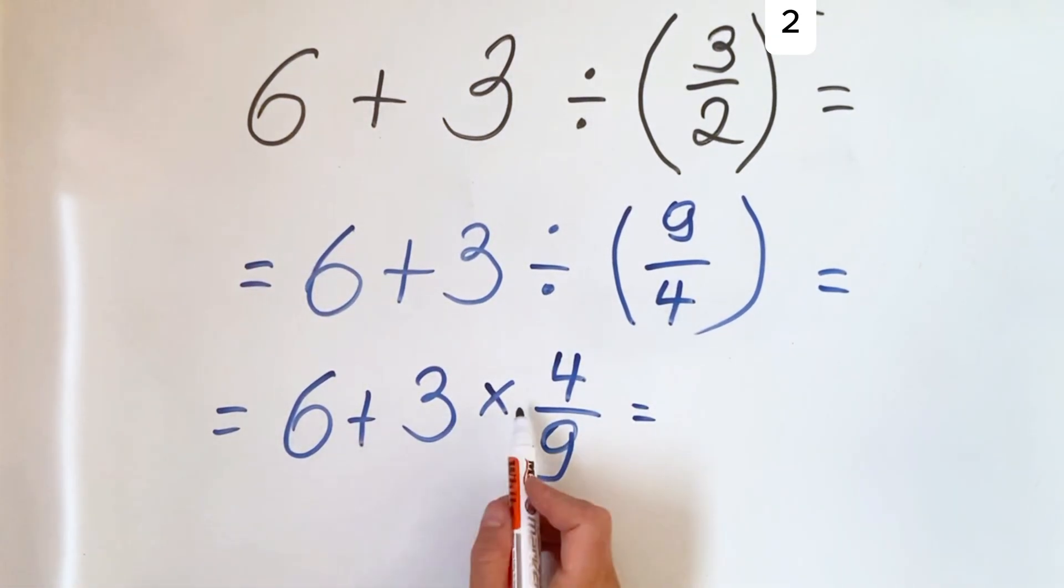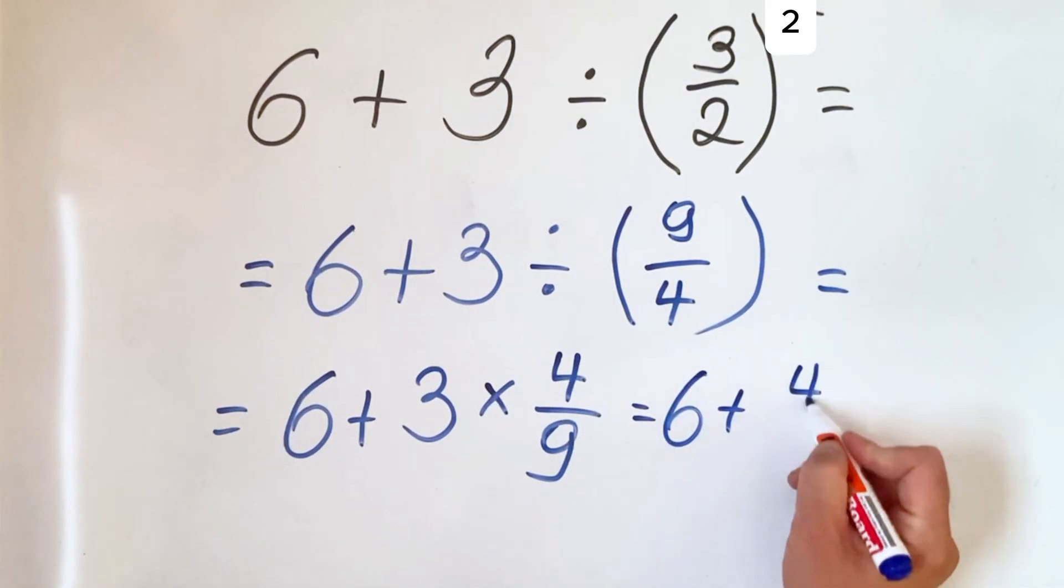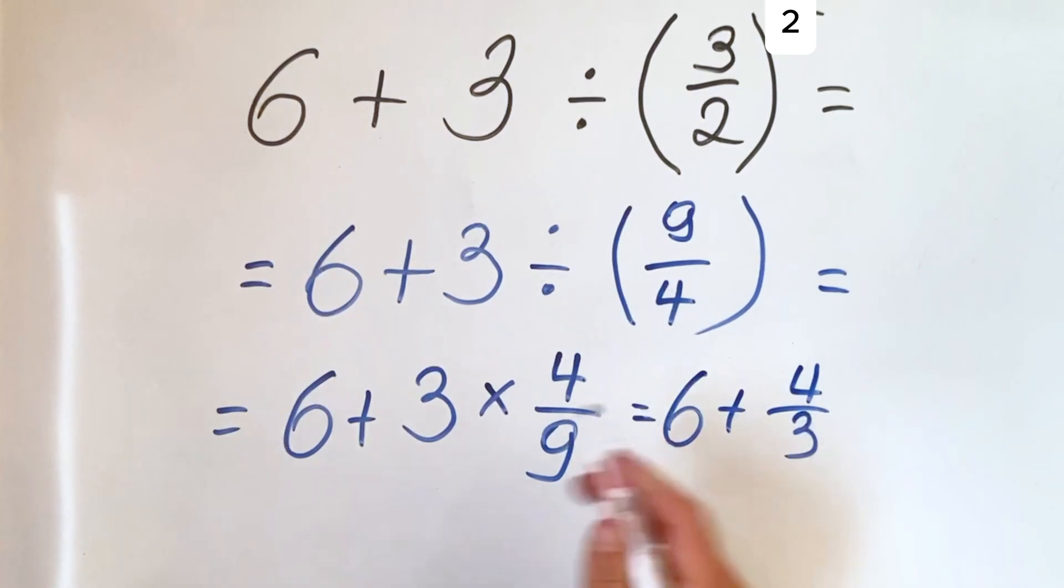So 3 multiplied by 4 over 9 gives us 4 over 3, so we have 6 + 4/3 because we cancel the 3. Now the denominator is 3, so we multiply 6 by 3.